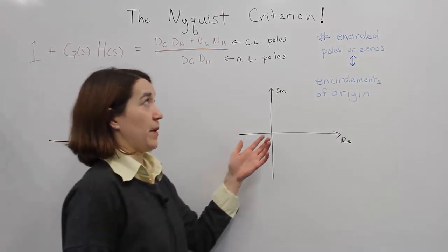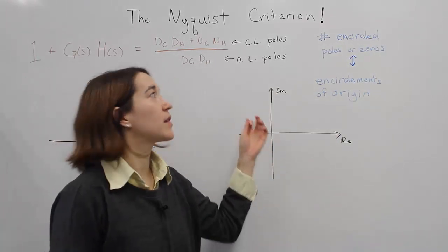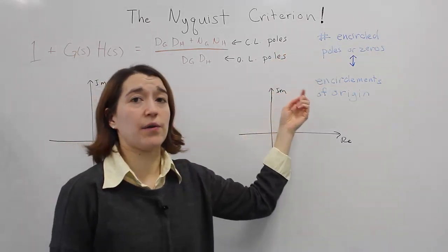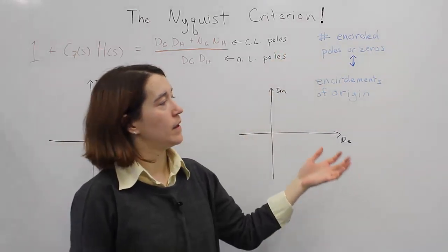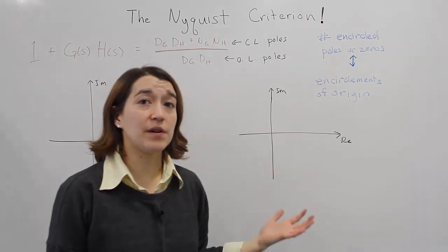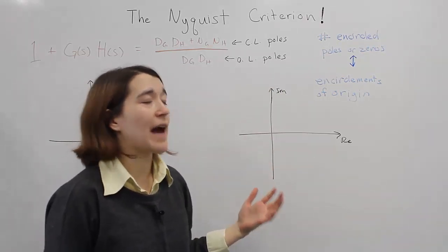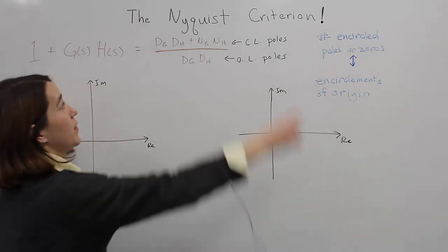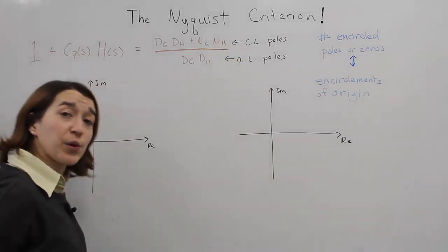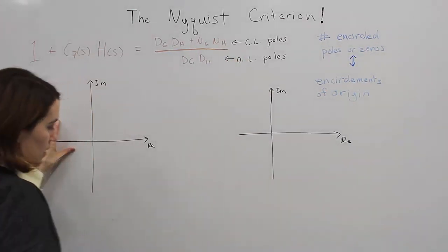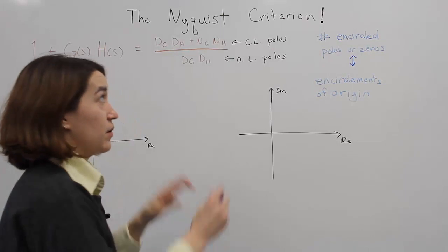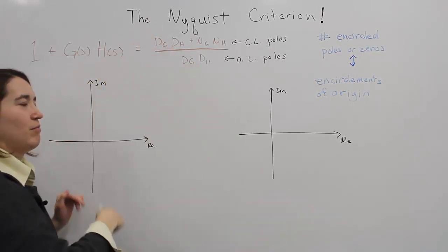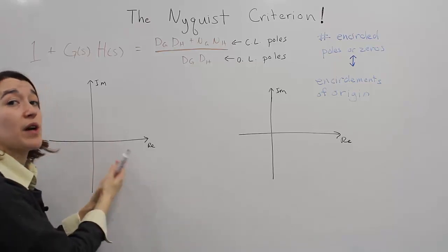We also know from contour mapping that there's a relationship between the number of encircled poles or zeros and the encirclements around the origin. If we want to relate this to stability, we know that stability has to do with all the poles being on the left half plane. We want the closed-loop poles to be on the left half plane, and we want to be able to check that.